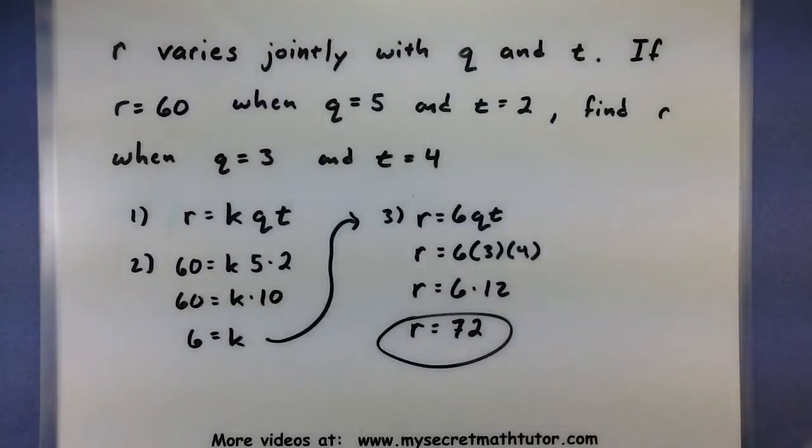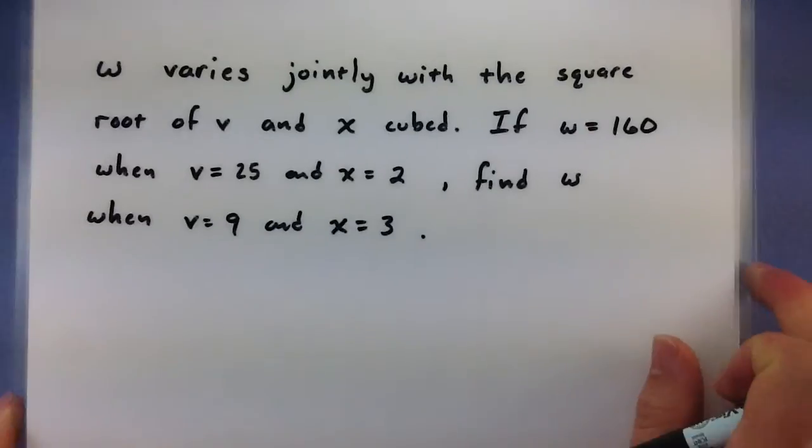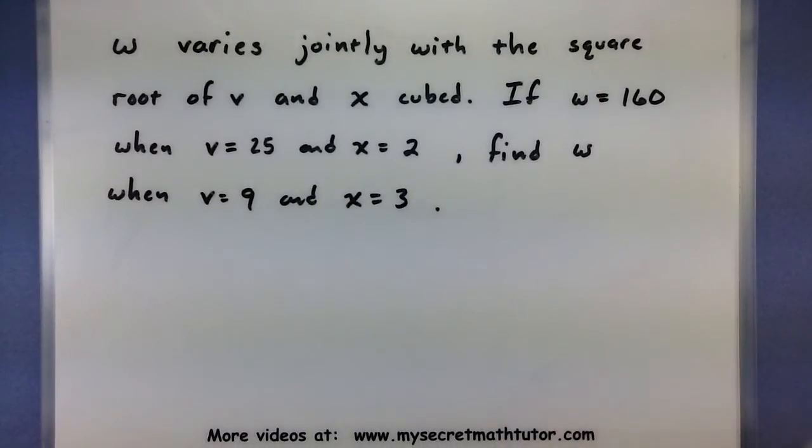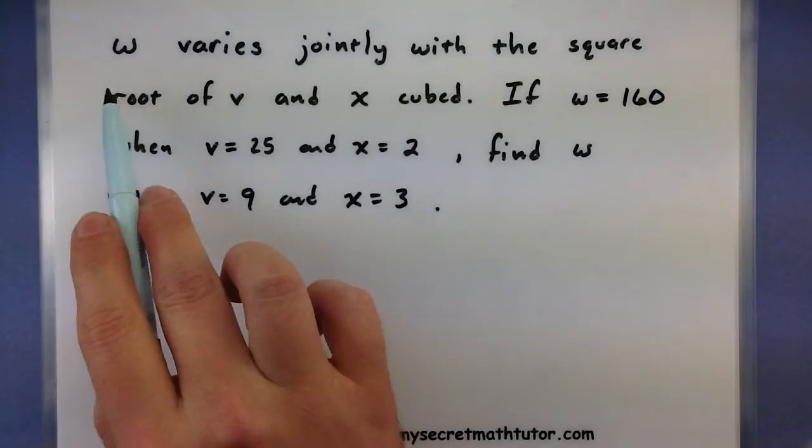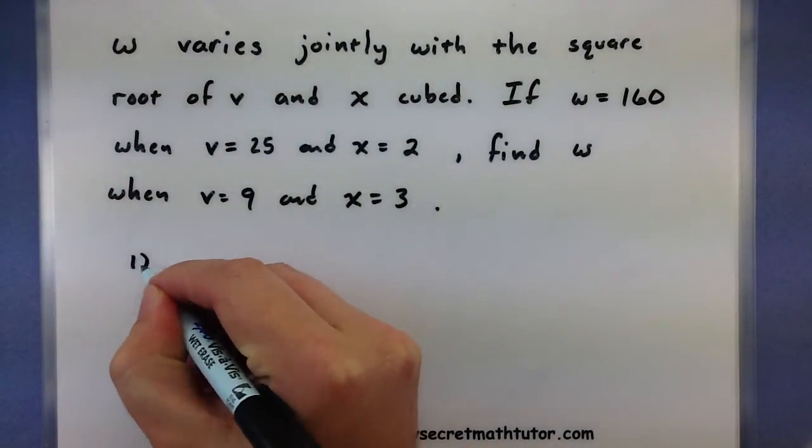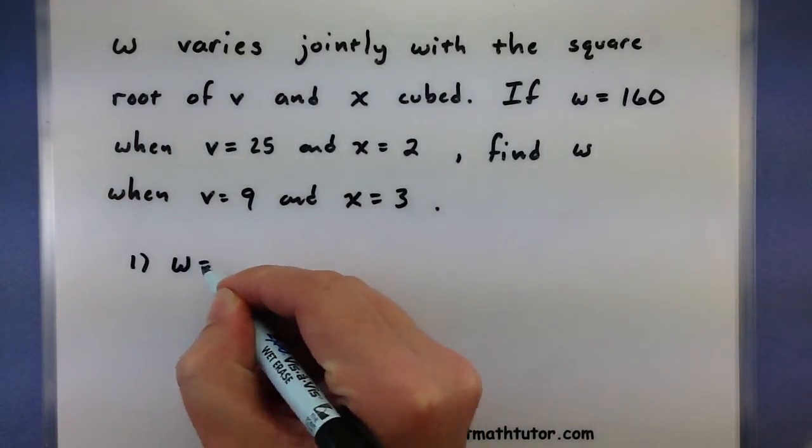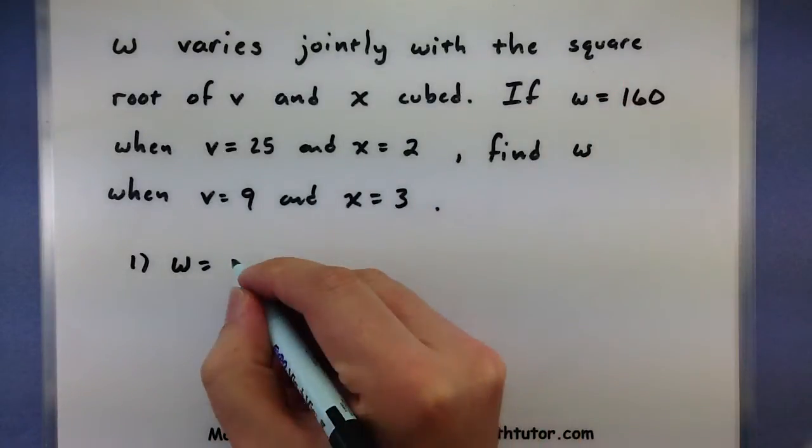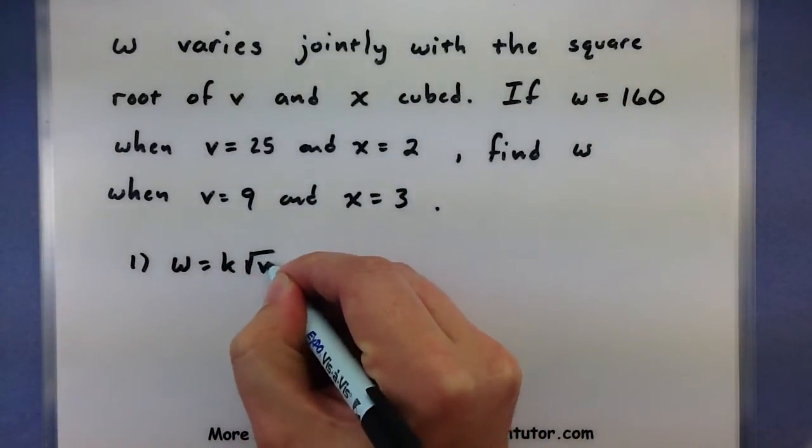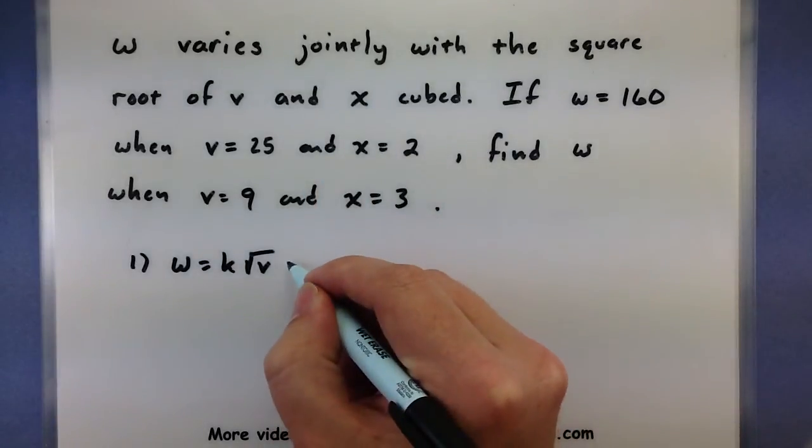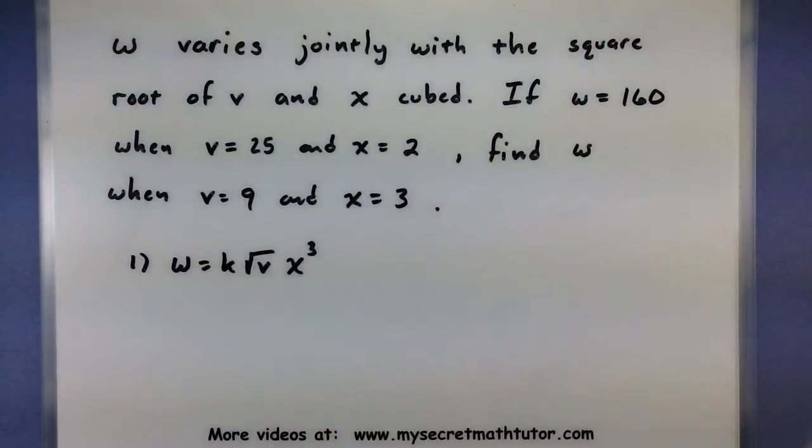Let's take a look at another one that has a little bit of a twist to it. In this next one, we have w varies jointly with the square root of v and x cubed. If w equals 160 when v equals 25 and x equals 2, find w when v equals 9 and x equals 3. Let's start with writing down the formula for joint variation. So w varies jointly with the square root of v and x cubed. Not too bad.